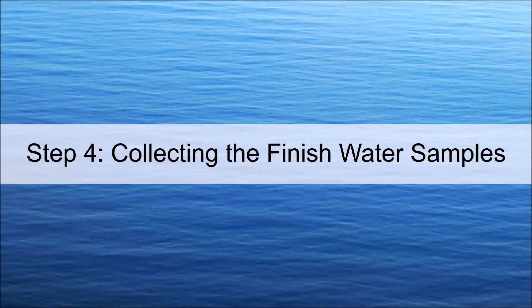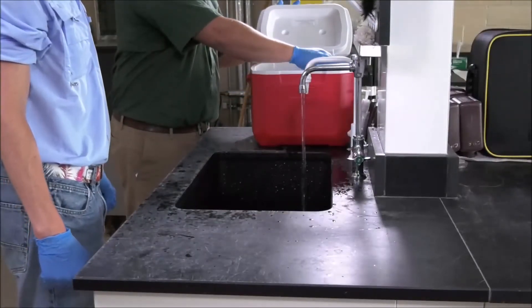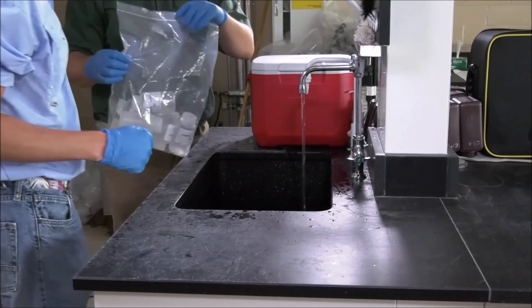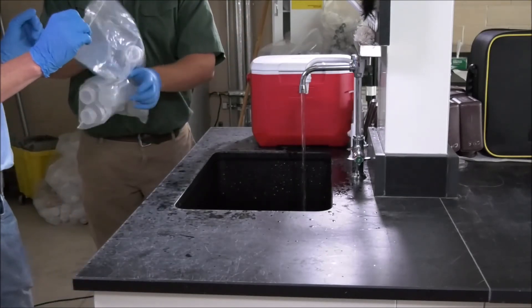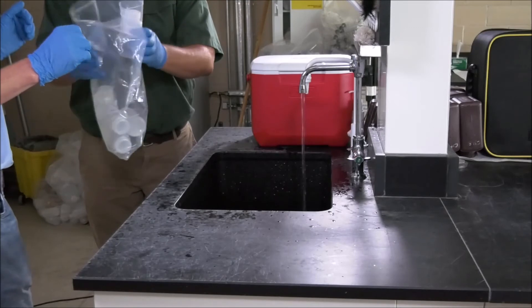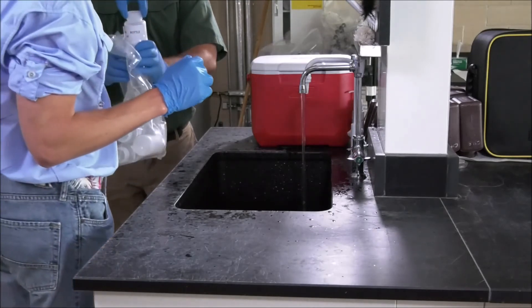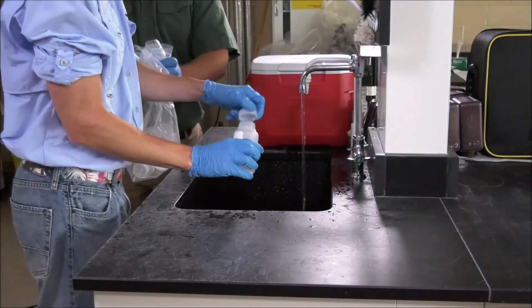Step 4: Collecting the finished water samples. Dirty hands will remove the resealable plastic bag with empty sample bottles from the cooler. They will open the bag and using the outside of the bag, they will move a sample bottle to the bag opening. Clean hands will remove the sample bottle from the bag by touching the cap only. Then they will take off the cap and fill the bottle up to the bottom of the neck, taking care not to flush out the preservatives.